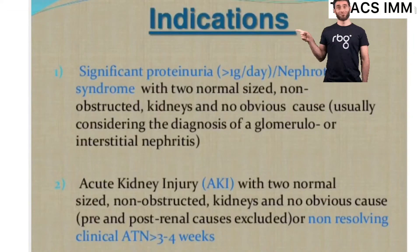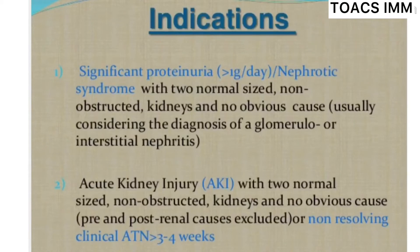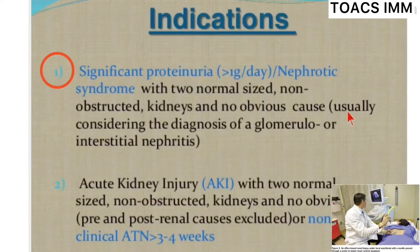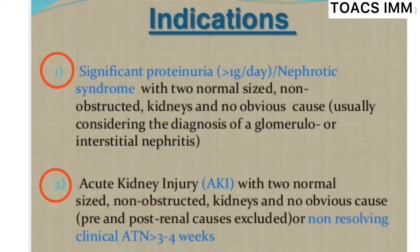What are the indications of renal biopsy? Number one: significant proteinuria, that is more than one gram per day, or nephrotic syndrome with two normal-size non-obstructive kidneys and no obvious cause, usually considering the diagnosis of glomerular or interstitial nephritis. Number two: acute kidney injury with two normal-size non-obstructive kidneys with no obvious cause, or non-resolving clinical ATN of more than three to four weeks.